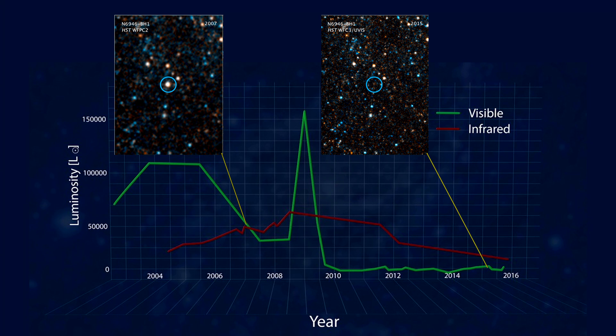After the LBT turned up the star, astronomers aimed the Hubble for visible light and Spitzer for infrared light to see if the star was still there. All tests came up negative. The star was no longer there.